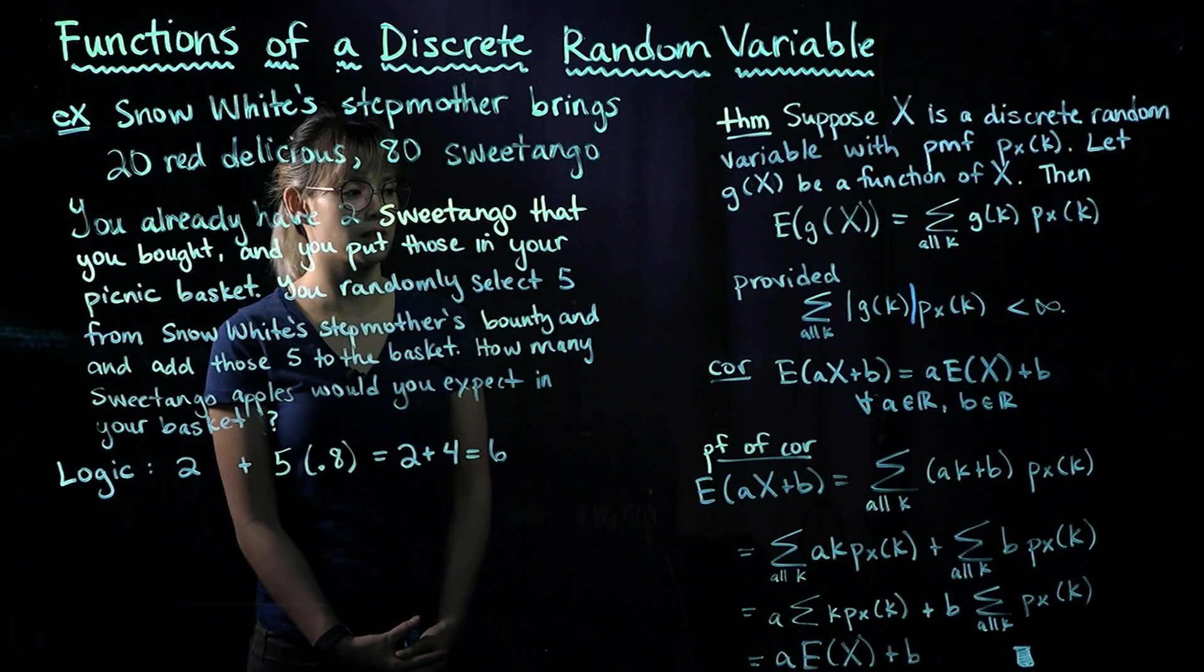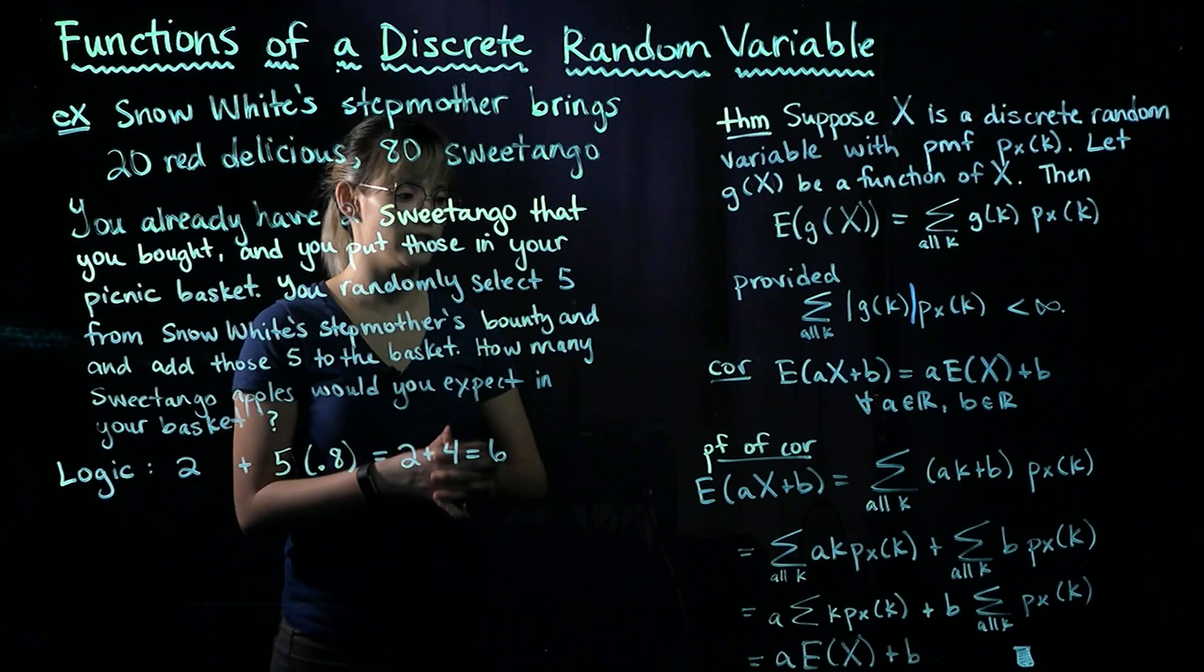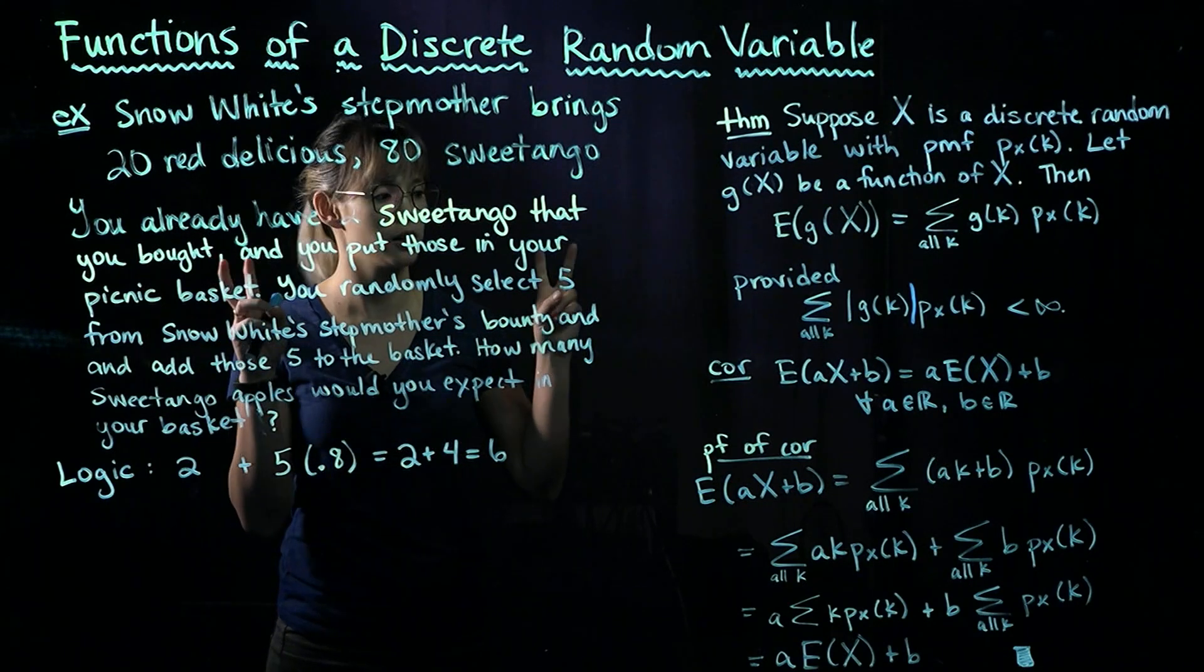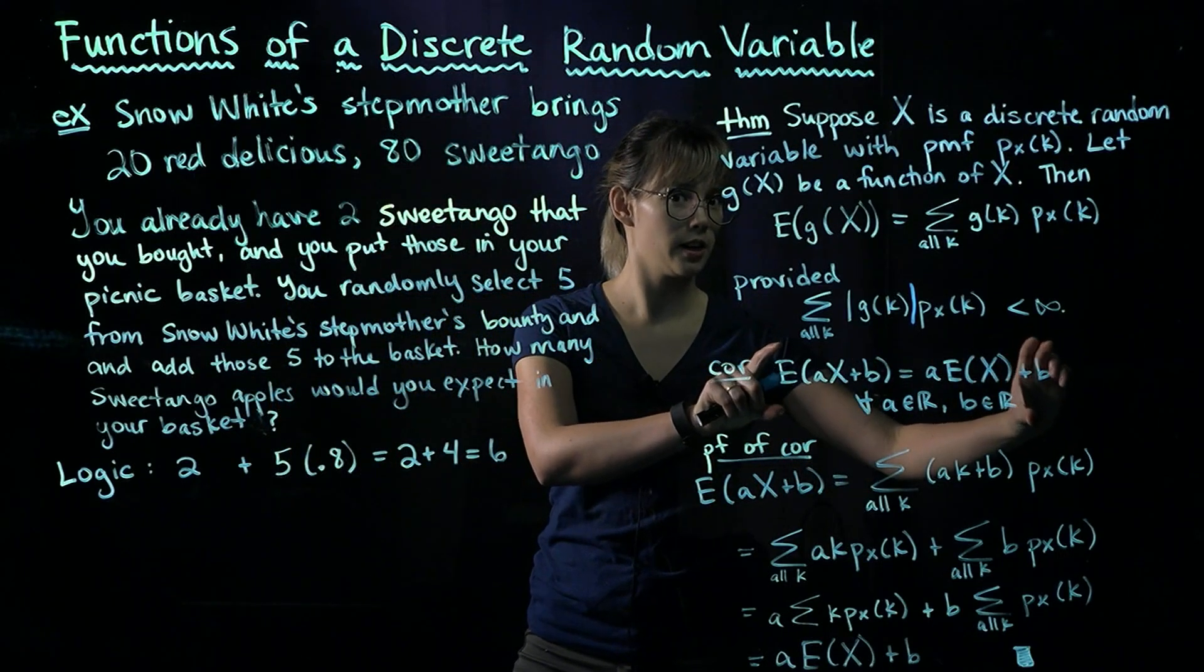So this is pretty easy to prove. And also, by the way, this is called the linearity of expectation. So if you hear someone say linearity of expectation, that means they're talking about this corollary right here.